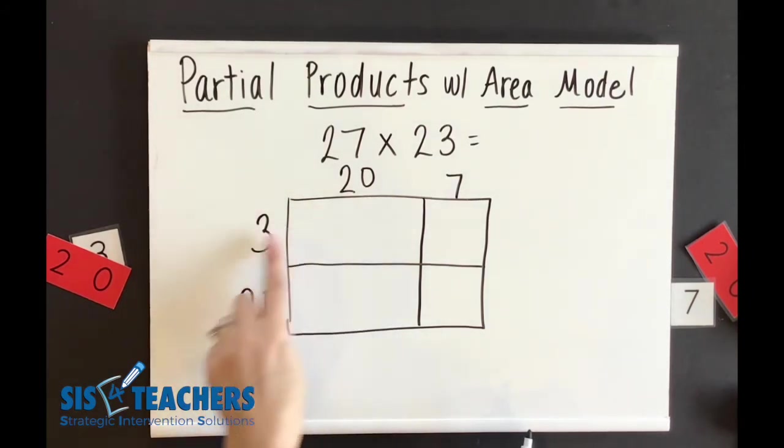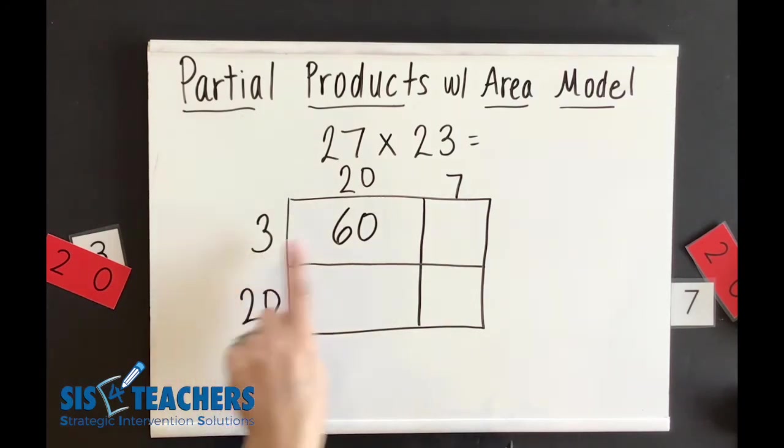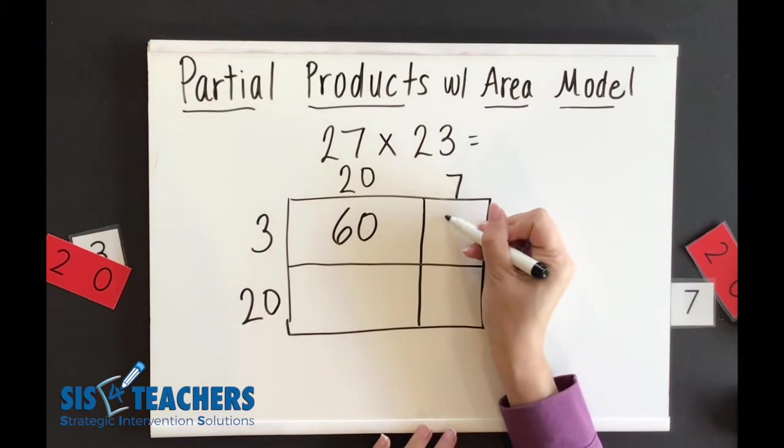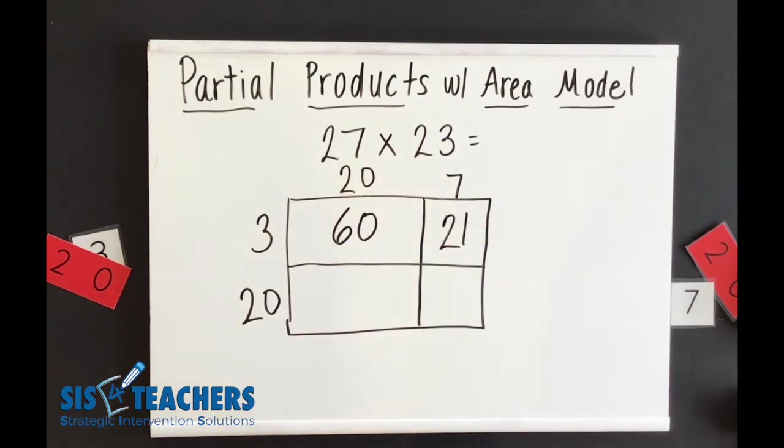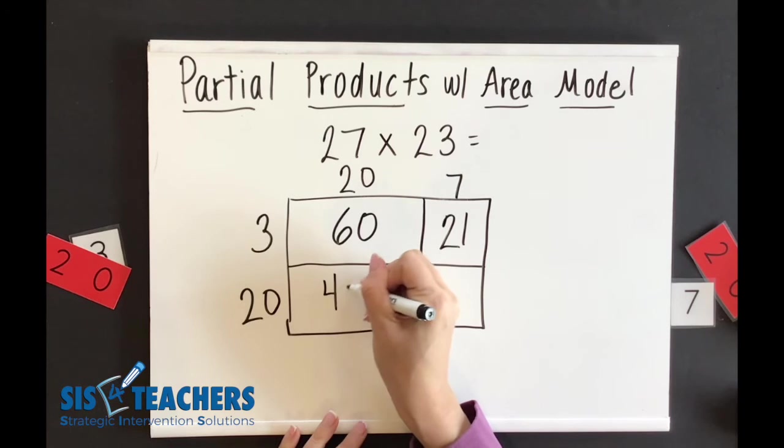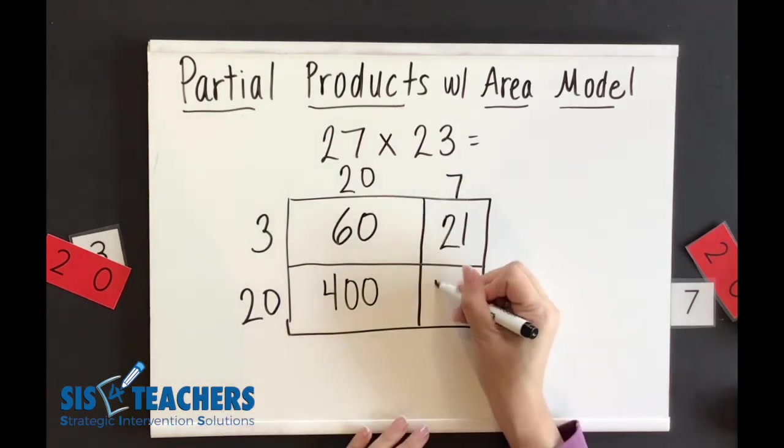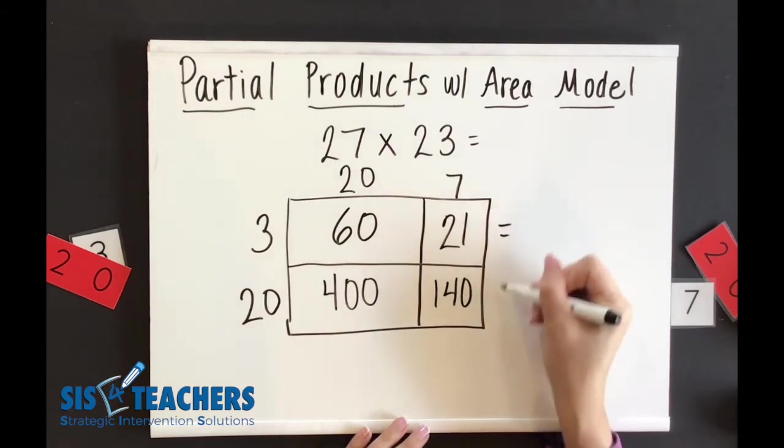We're going to start off looking at these different parts. So we're going to say what is 3 groups of 20. I know that 3 groups of 20 is 60. If I looked at here, this is 3 groups of 7. I know that 3 groups of 7 is 21. Now we're going to go to the second part of the area box because we have to do all the parts of the number to multiply this out. So we know that 20 times 20 is 400. Now if we do 20 times 7, we know that is 140.